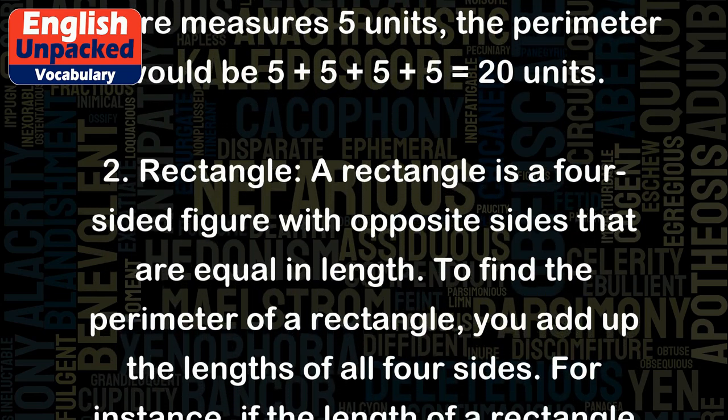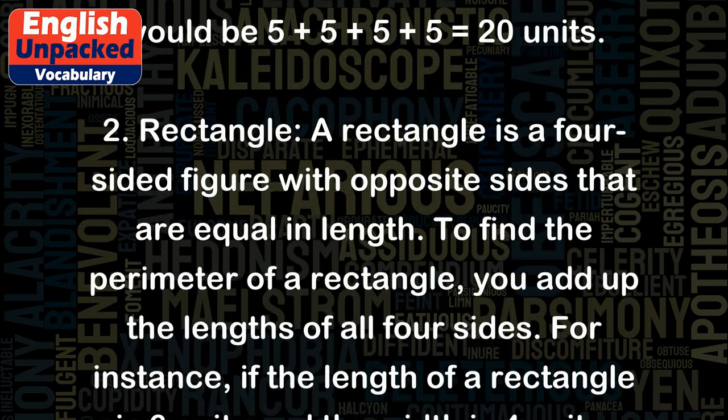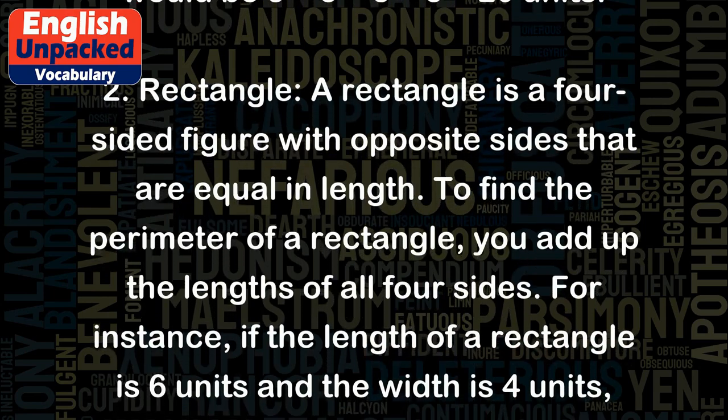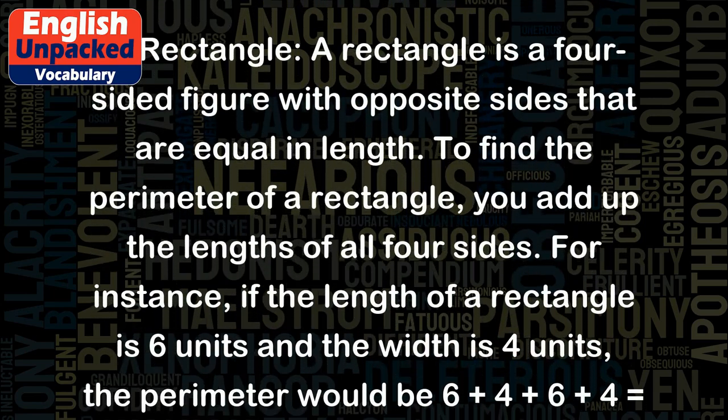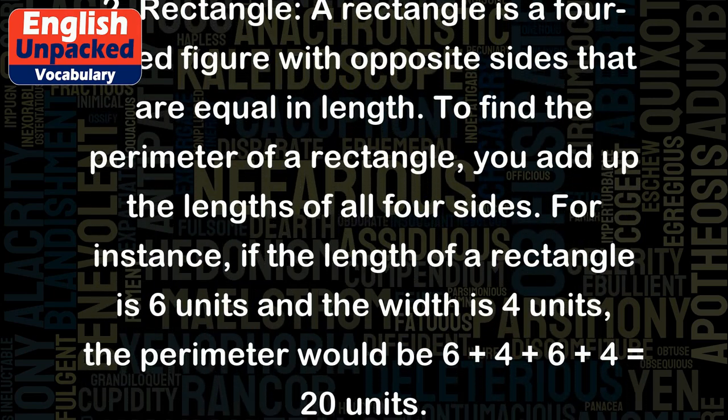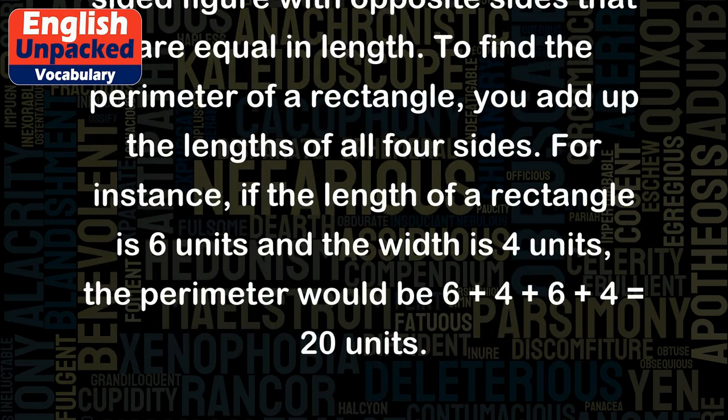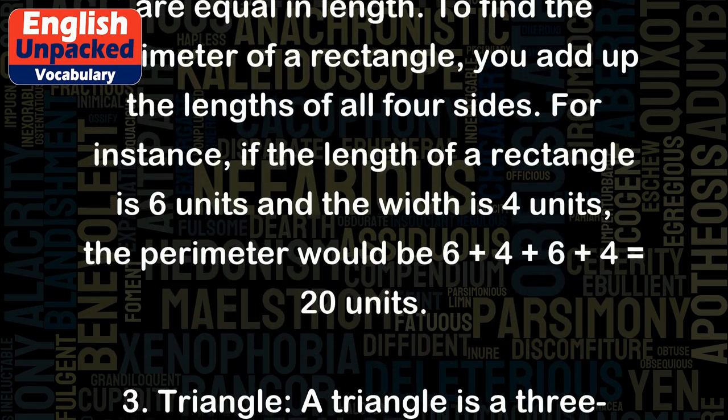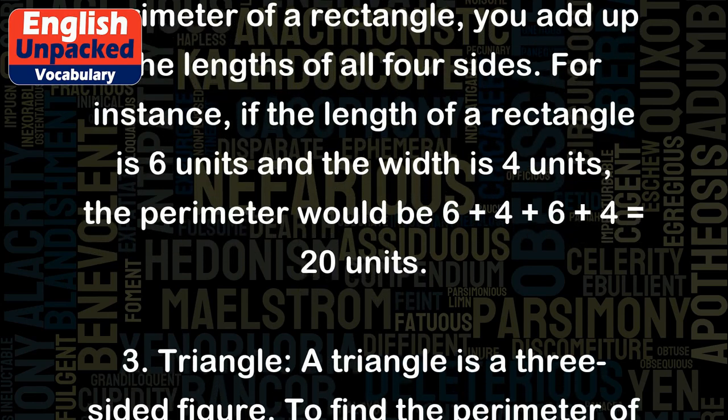To find the perimeter of a rectangle, you add up the lengths of all four sides. For instance, if the length of a rectangle is 6 units and the width is 4 units, the perimeter would be 6 plus 4 plus 6 plus 4 equals 20 units.